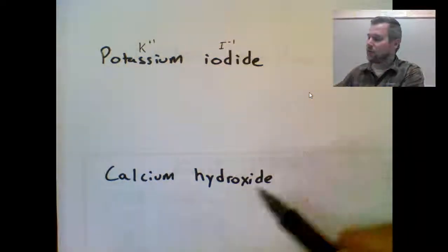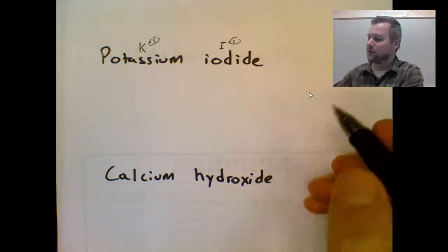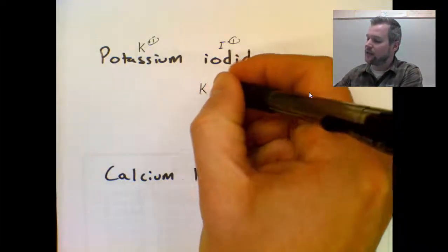And then you have to crisscross, make sure that your charges cancel. Plus one, minus one cancel, so I don't need to crisscross. Potassium iodide is just KI.